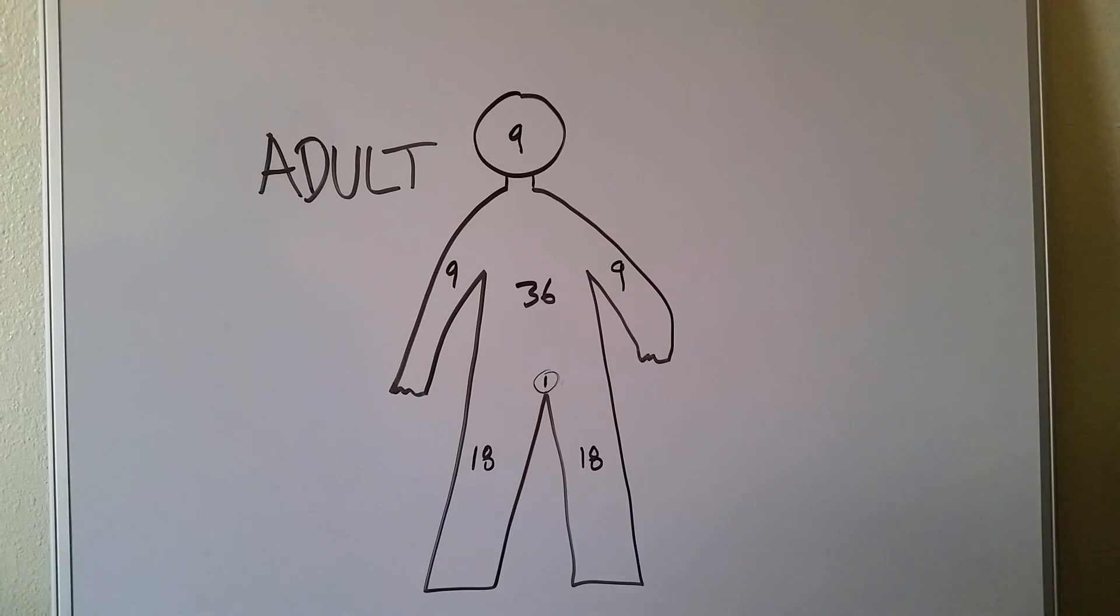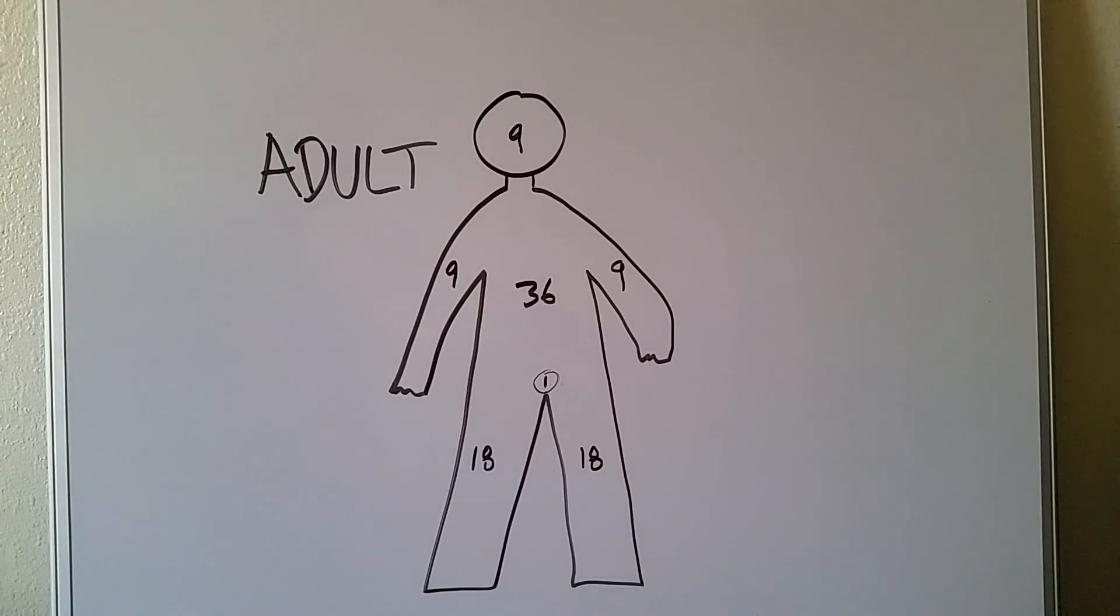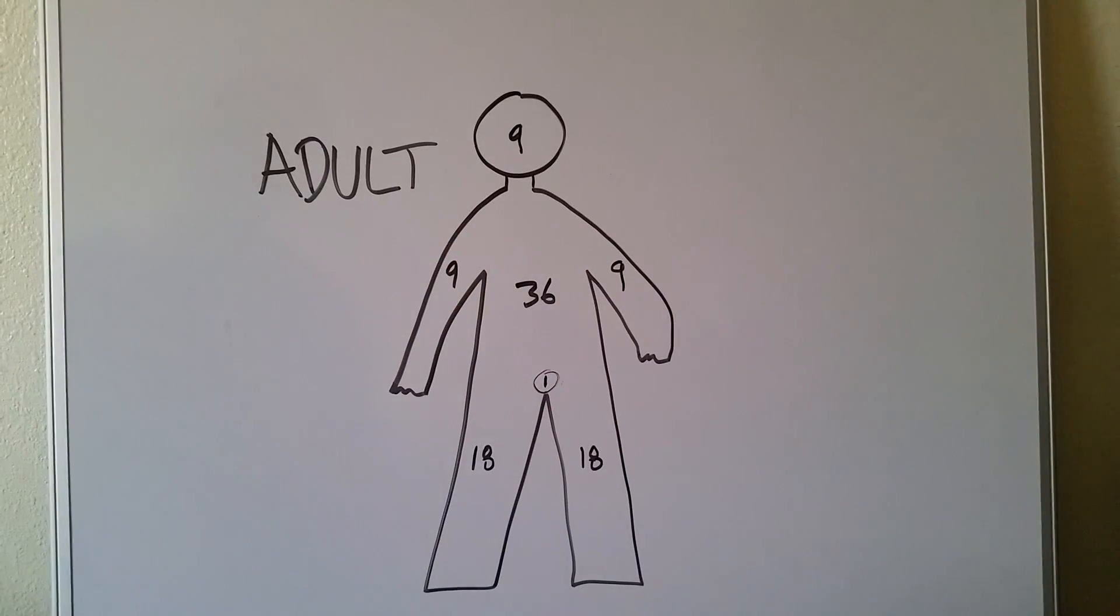So if you just remember, rule of nines, we're going to start with nines, we're going to start with the arms. So nine, nine times two is 18, 18, times two, 36 and one for the perineum or the groin, and that only leaves nine left. That gives you a total of a hundred percent.